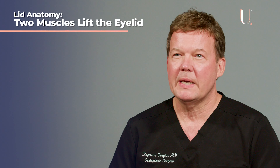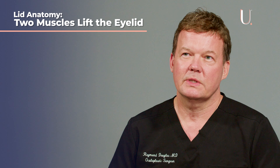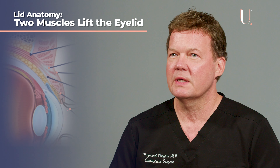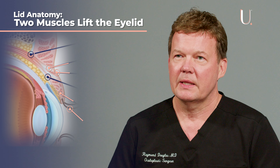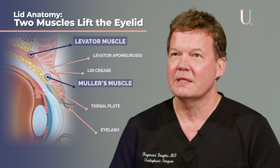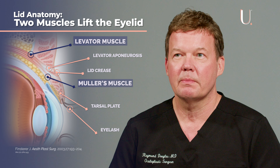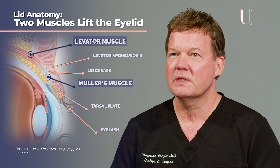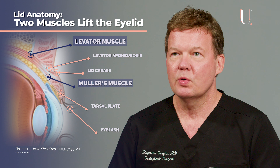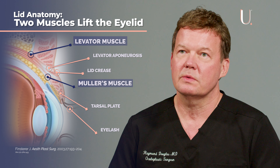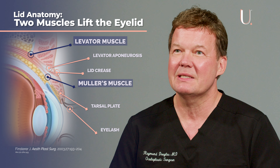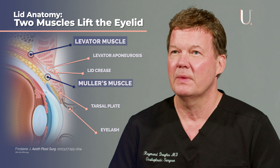There are two main muscles in the eyelid that are responsible for lifting the eyelid. The levator muscle, which opens the eye, is a voluntary muscle and lifts the lid about 14 millimeters. The Mueller's muscle is a smooth muscle that cannot be controlled and needs to be stimulated to lift the eyelid.